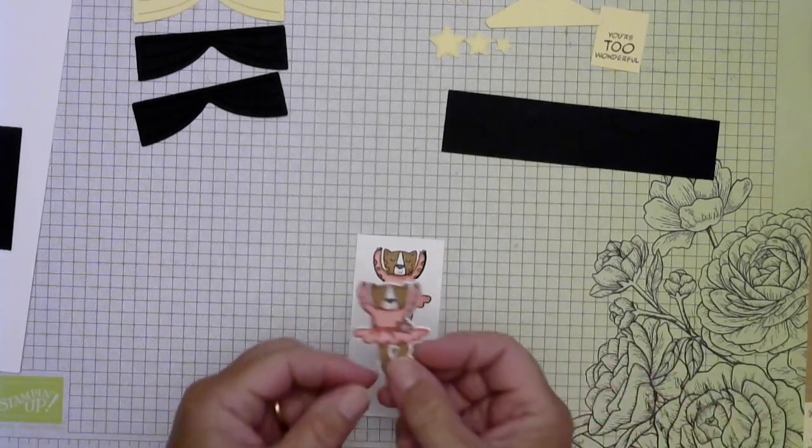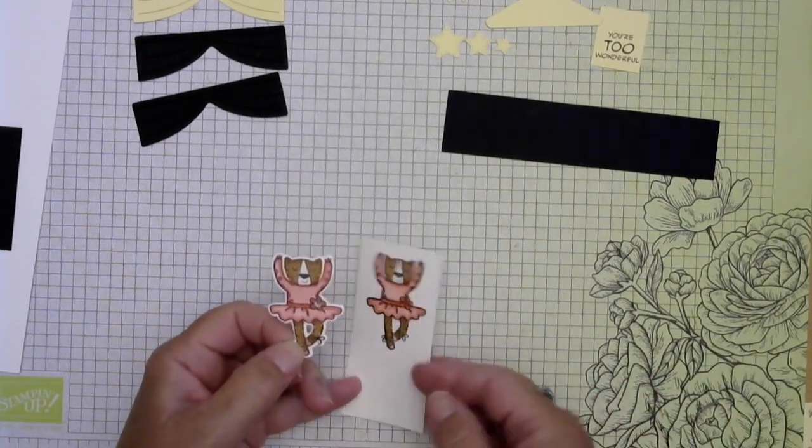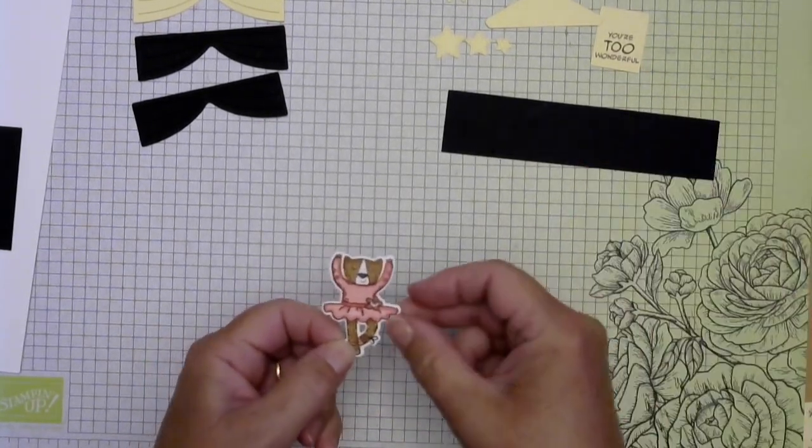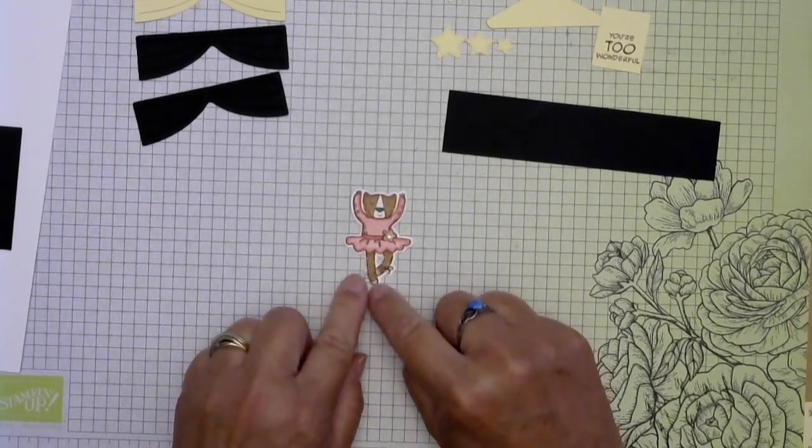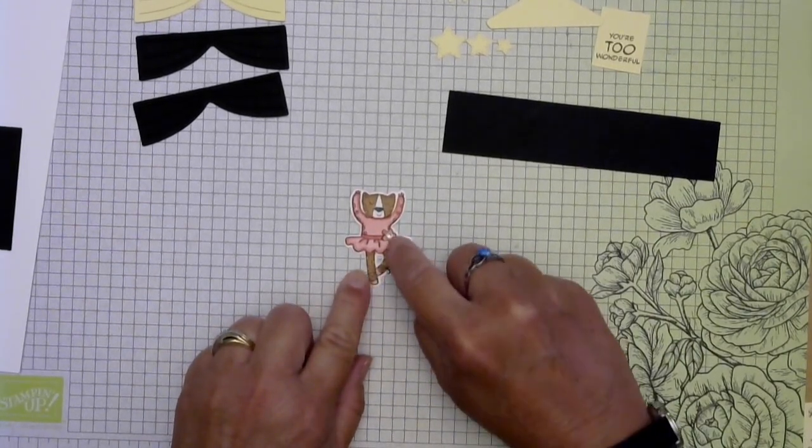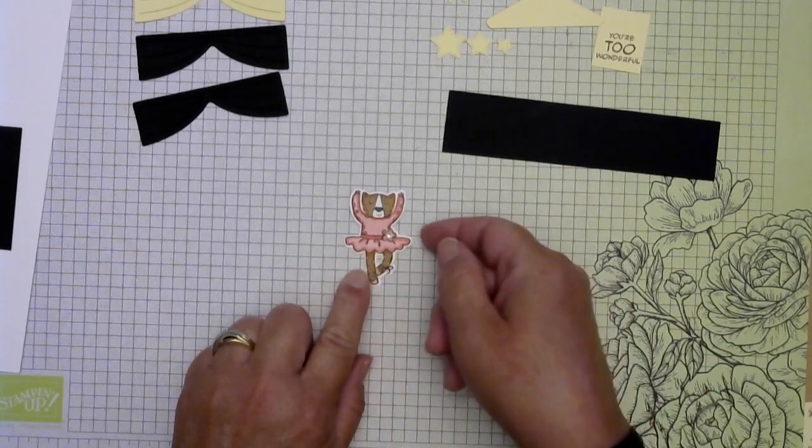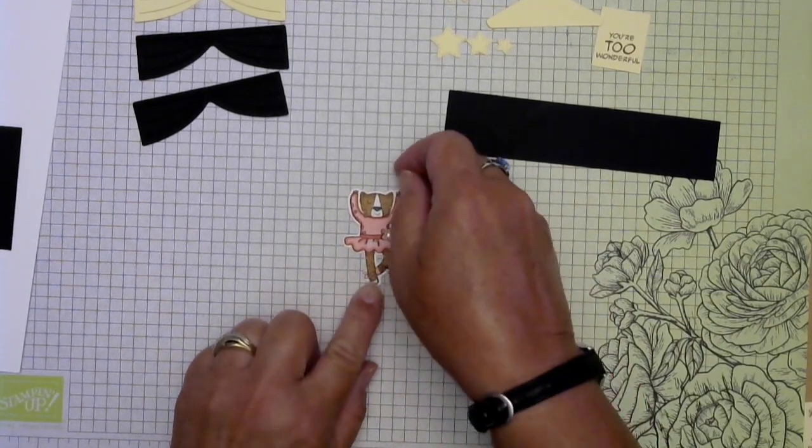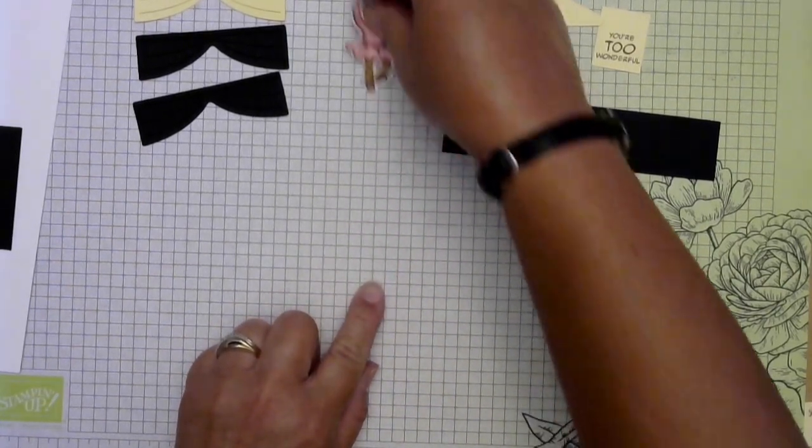So then once I have that all done I go ahead and cut her out. And I've added a little bit of Wink of Stella on her toes and on her flower and then added a rhinestone just for a little bit of bling there. So now we can start assembling since all the pieces are ready.